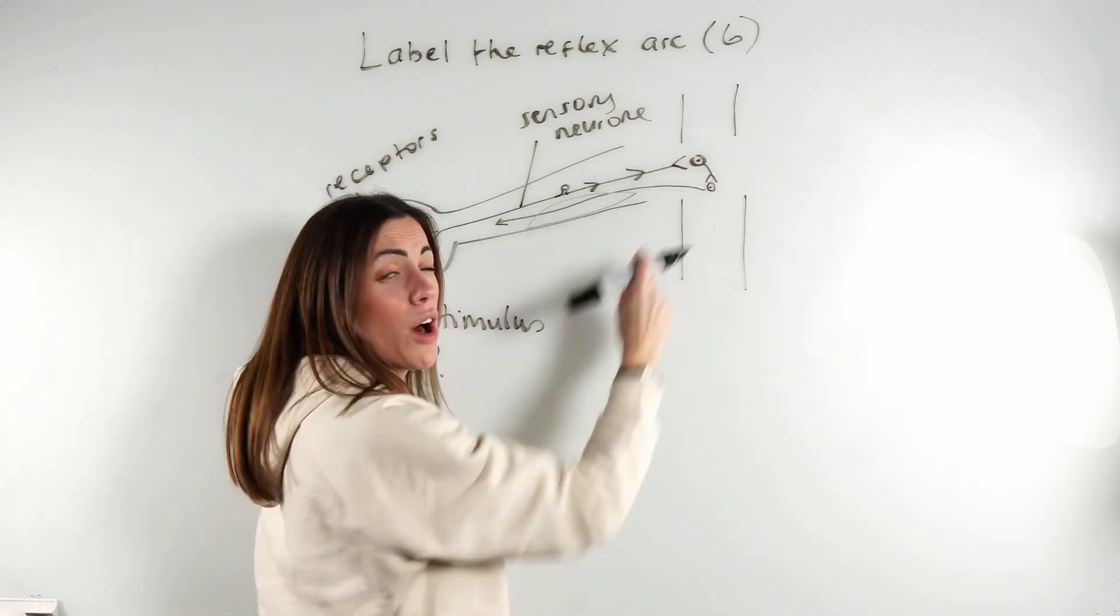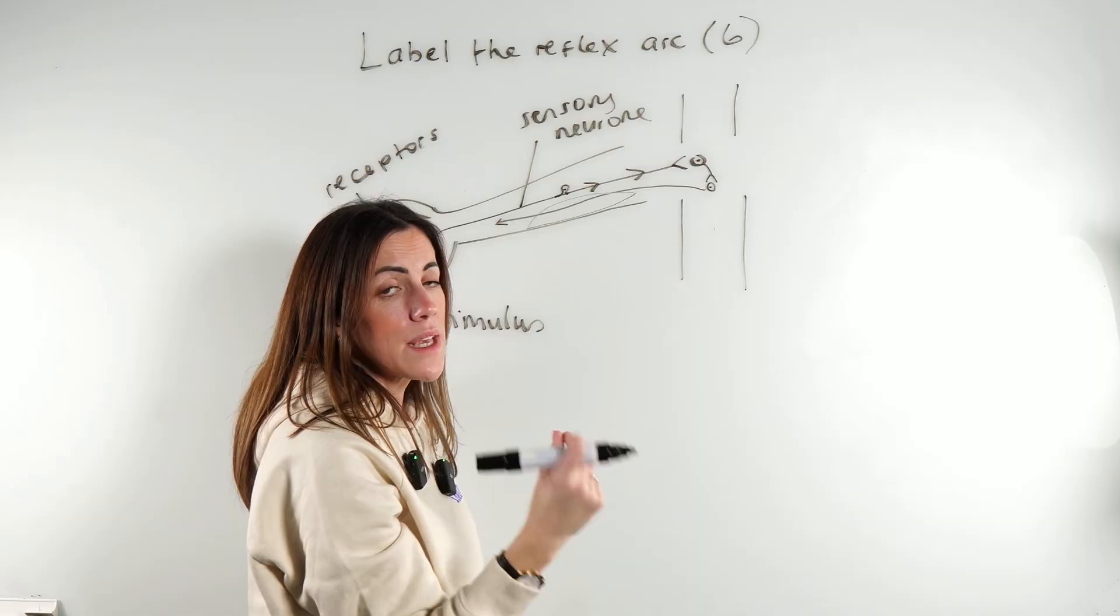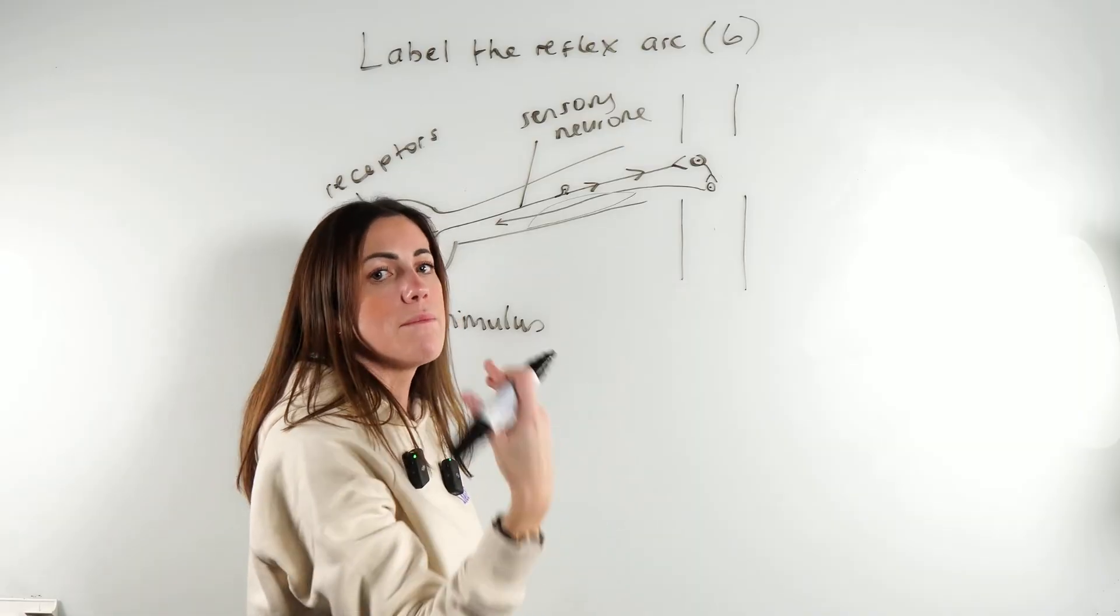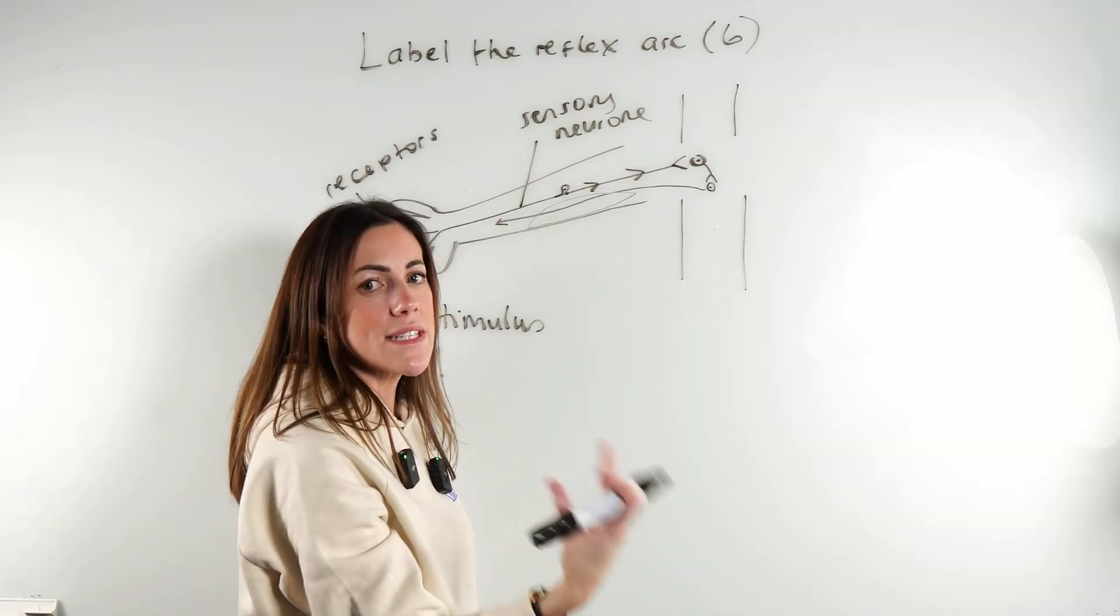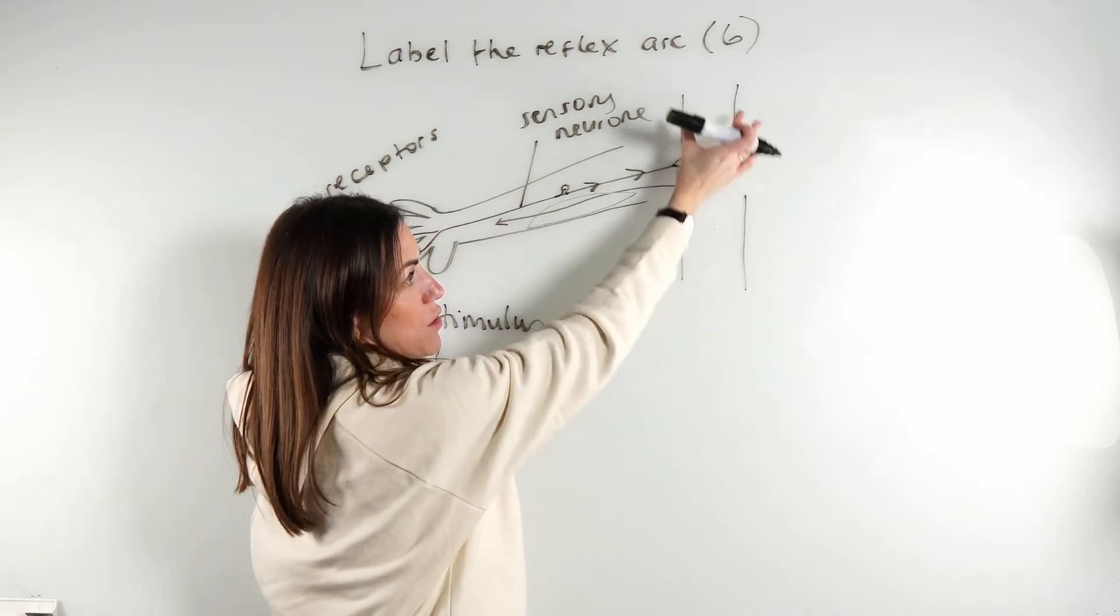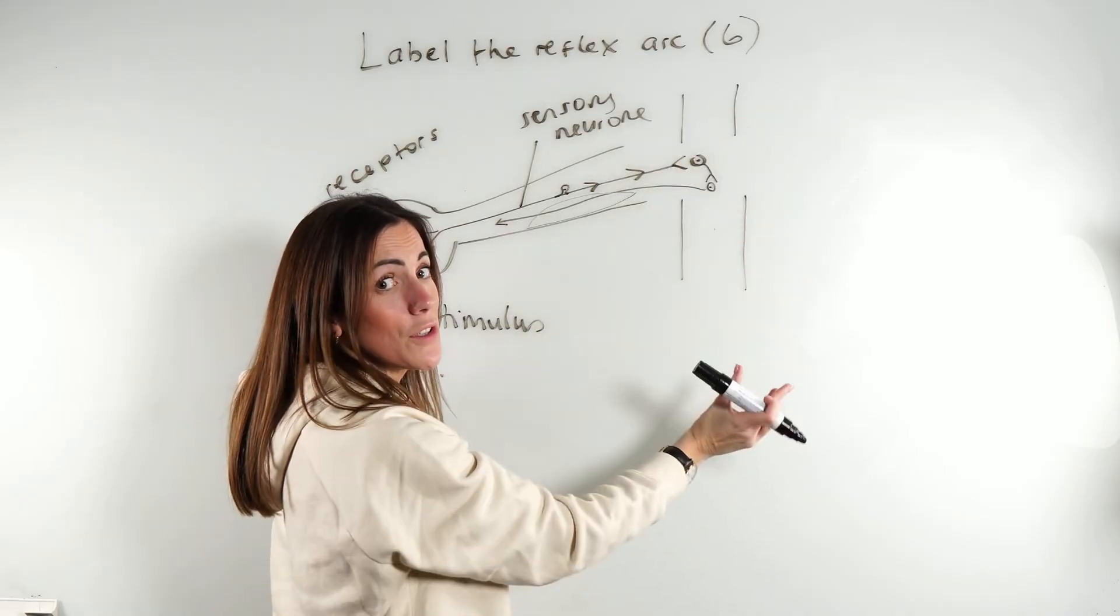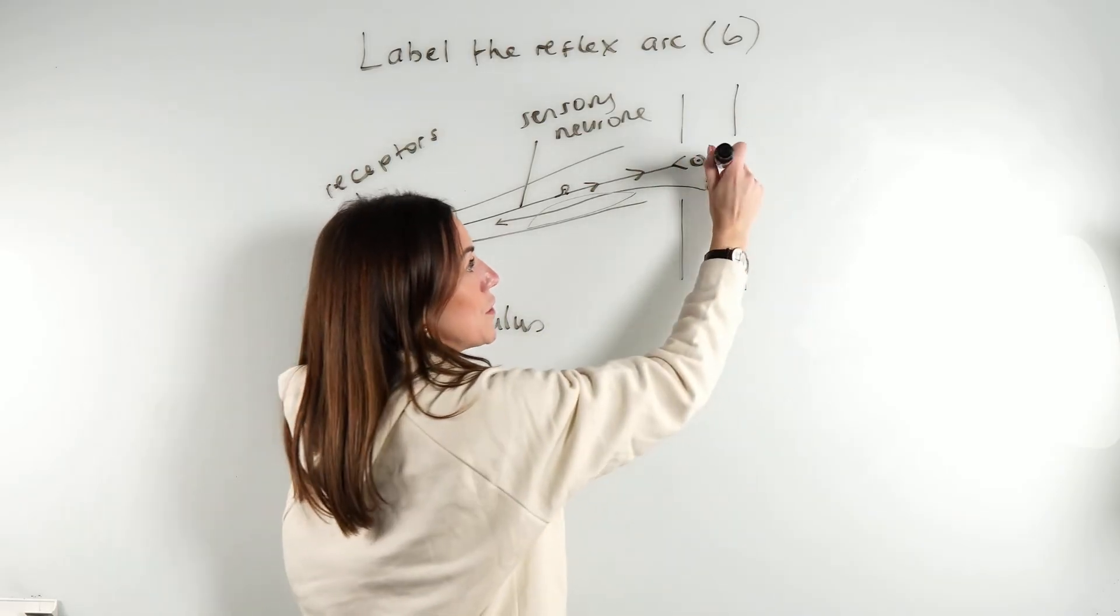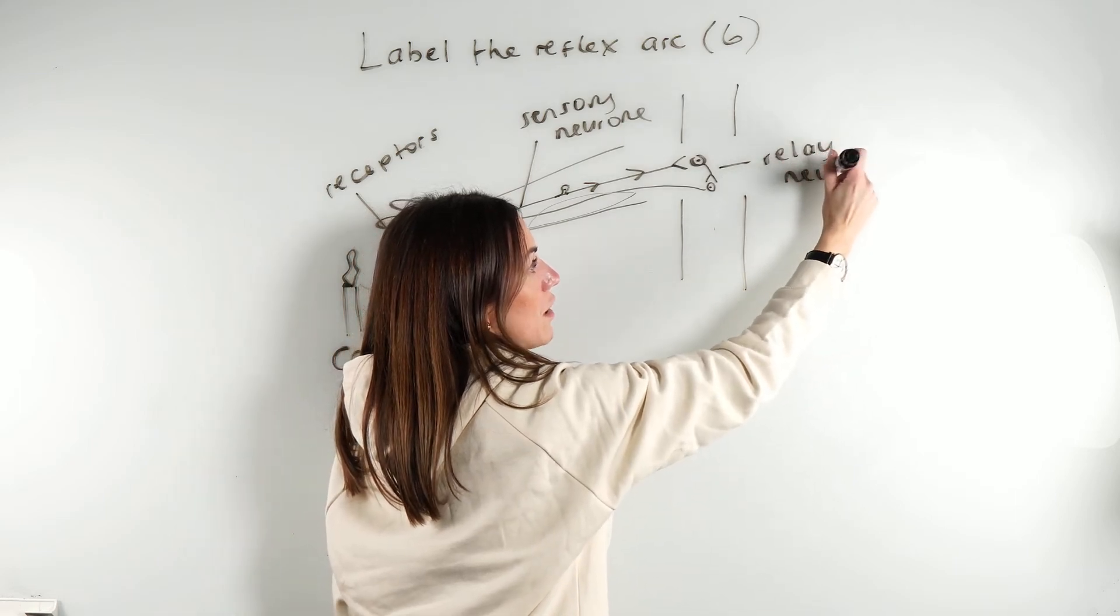Here, this neuron—it looks a little bit smaller—is between the sensory and the motor and it's in the central nervous system. This, by the way, is meant to be your spinal cord. So it's in the spinal cord, which means that must be our relay neuron.